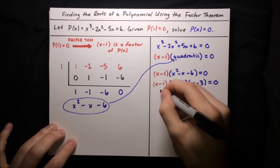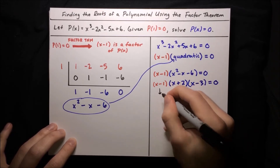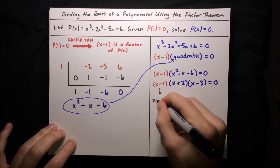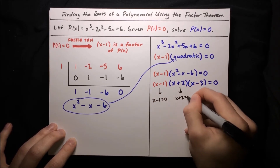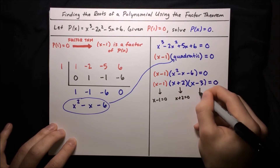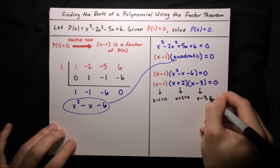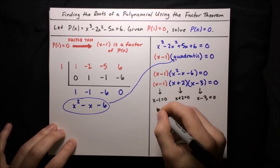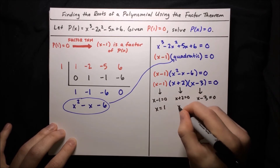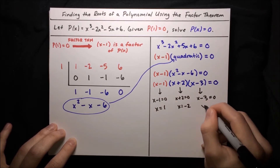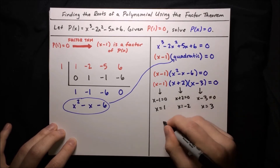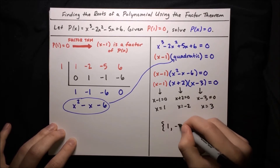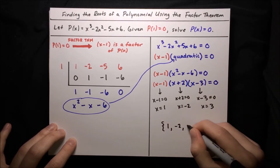Now let's use the zero product property to set each factor equal to 0. The solutions are: x minus 1 equals 0, x plus 2 equals 0, and x minus 3 equals 0. These are all easy to solve: either x equals 1, or x equals negative 2, or x equals 3. So that's our solution set: 1, negative 2, and 3.